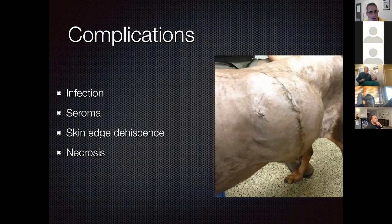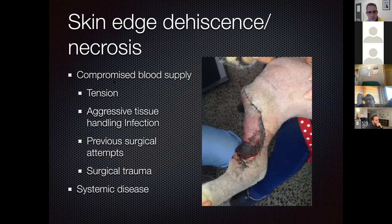Complications with flaps include infection, seroma, skin edge dehiscence, and necrosis. Dehiscence and necrosis result from compromised blood supply due to tension, aggressive tissue handling, previous surgical attempts damaging the blood supply, surgical trauma, or systemic disease such as diabetes. A discolored flap at 12 hours post-surgery, turning purple, would be concerning for potential necrosis—vacuum-assisted closure applied at that point can help salvage some of these flaps.